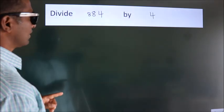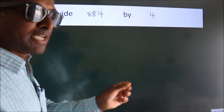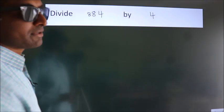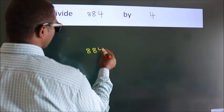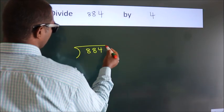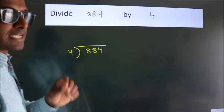Divide 884 by 4. To do this division, we should frame it in this way. 884 here, 4 here. This is step 1.